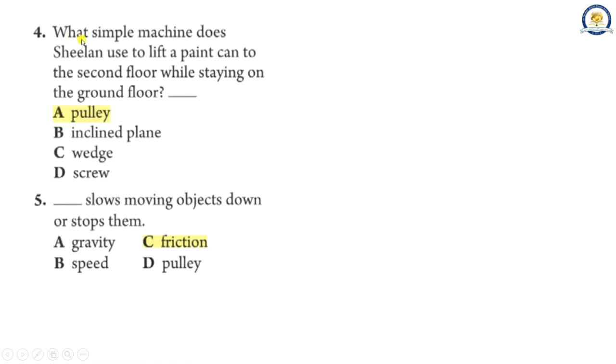4. What simple machine does Shielan use to lift a paint can to the second floor while staying on the ground floor? A. Pulley B. Incline plane C. Wedge D. Screw. The correct answer is A, Pulley.